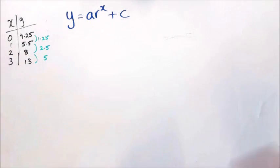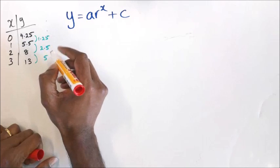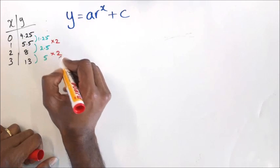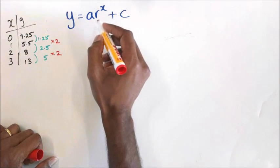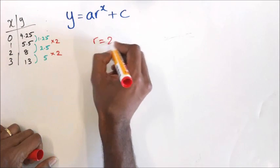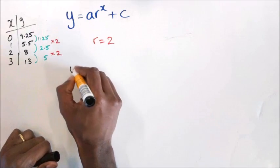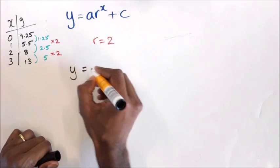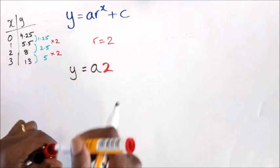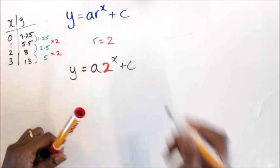What you should notice is that these green numbers are actually multiplying by 2. So if it's multiplying by 2, then we can say r equals 2. What you then have is an equation which is y equals a multiplied by 2 to the power of x, plus c.